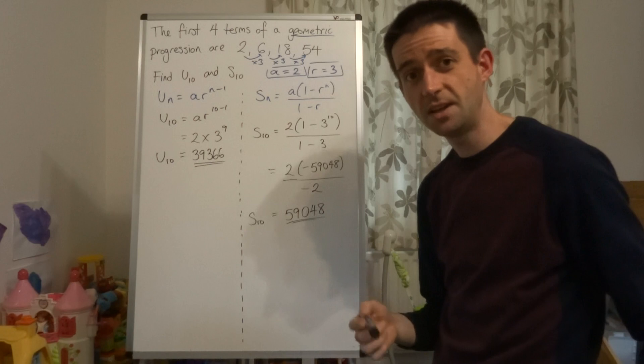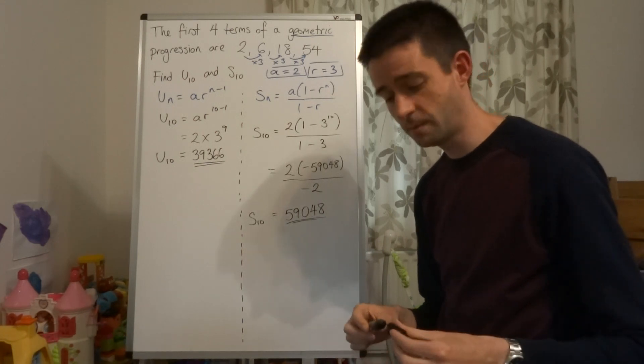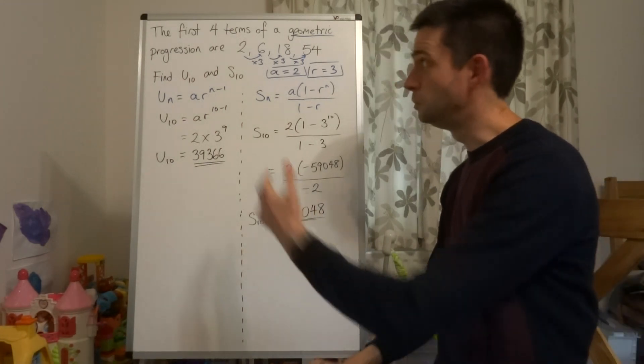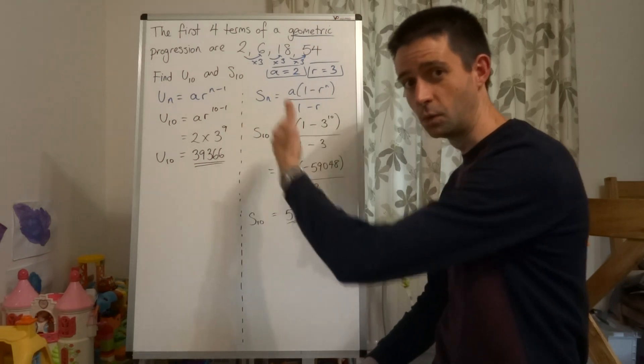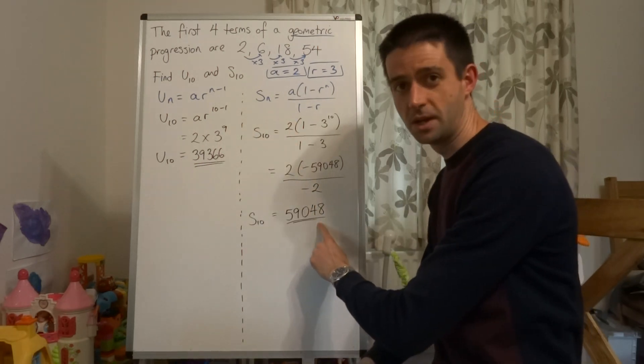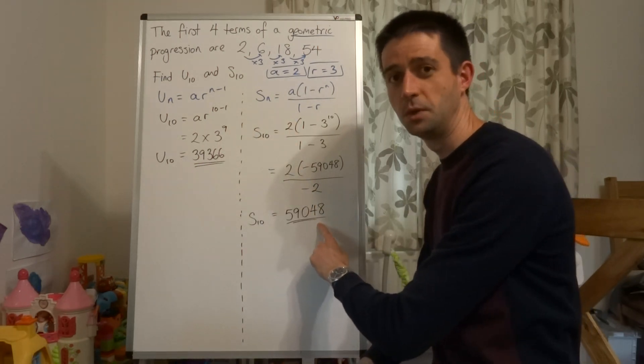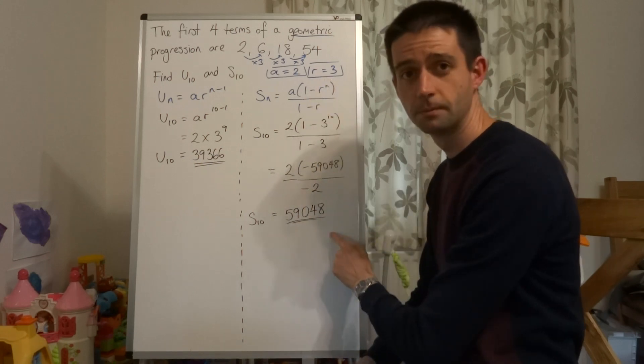So the sum of the first ten terms of this geometric progression - if you worked out each term and added them all up - the total would be 59,048. That's what you've just worked out using the sum formula. Job done.